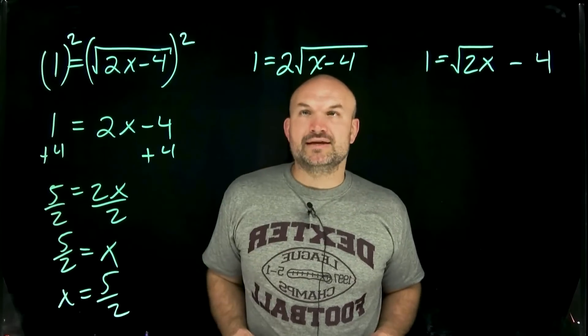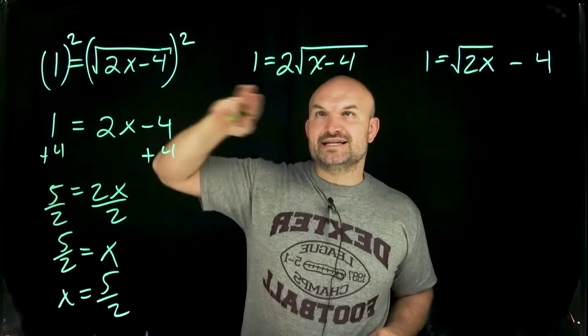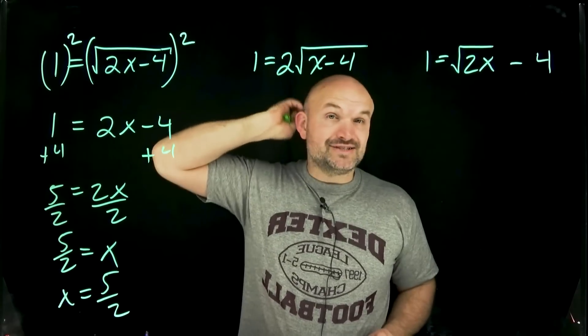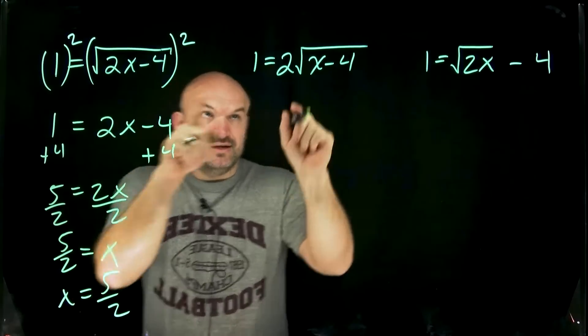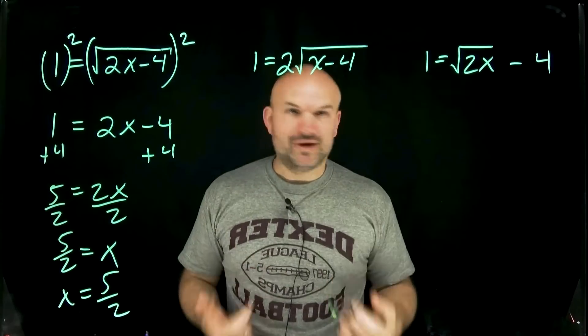Now let's look at this one. Now remember the first step over here was to go ahead and square both sides because we want to get rid of the radical. That is going to be our step once we have our radical isolated. See in this case we have the 2 on the outside. We don't want the 2 on the outside.